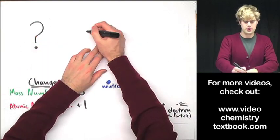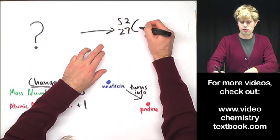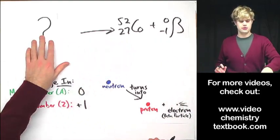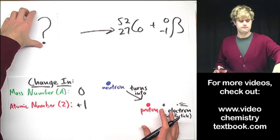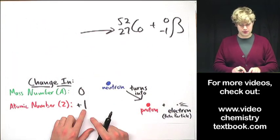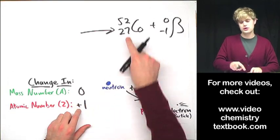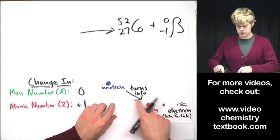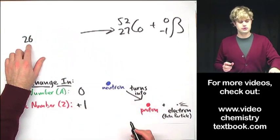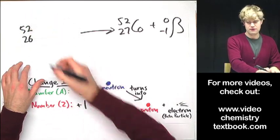We're starting with something, we don't know what it is, and it decays and gives us cobalt-52 as well as a beta particle. So before this process started, the atomic number was one lower, right? Because during beta decay, it increases by one. So it was one lower when that proton was still a neutron. So 26 protons we started out with, but the mass number doesn't change. So we have 52 up here.